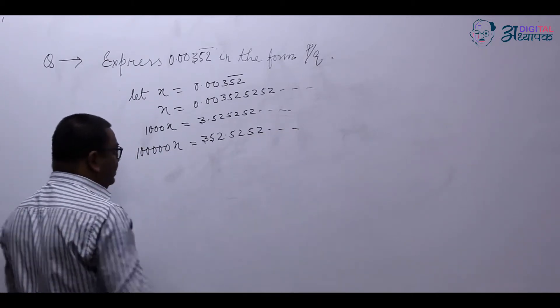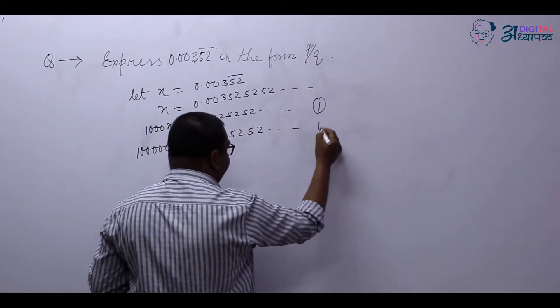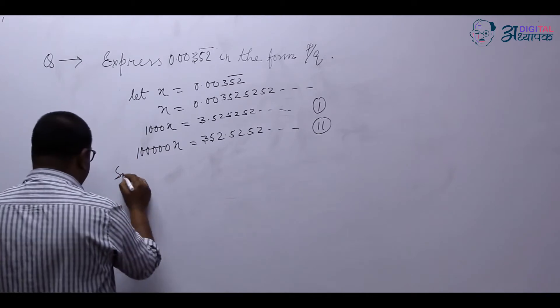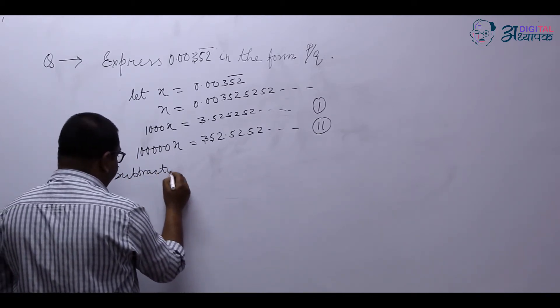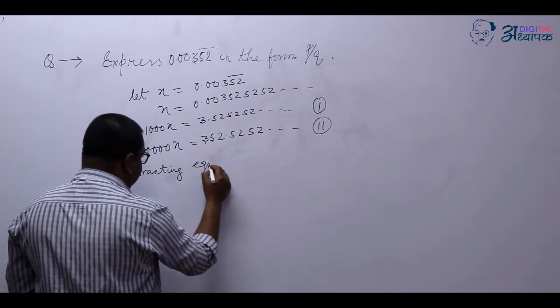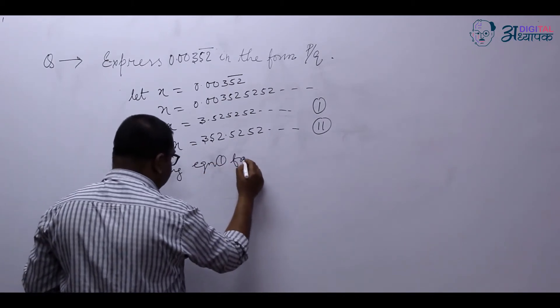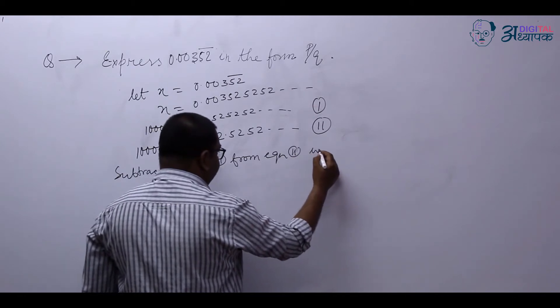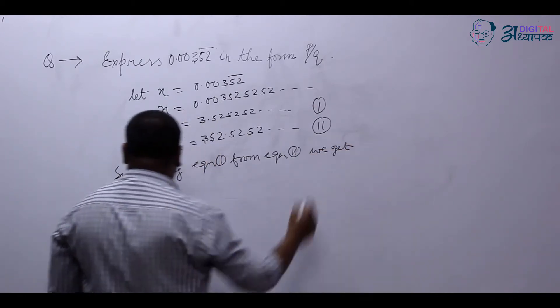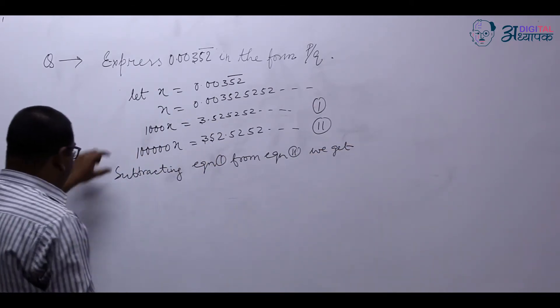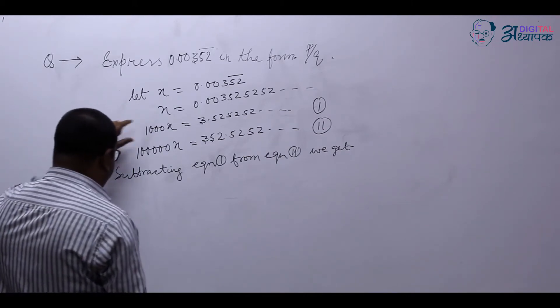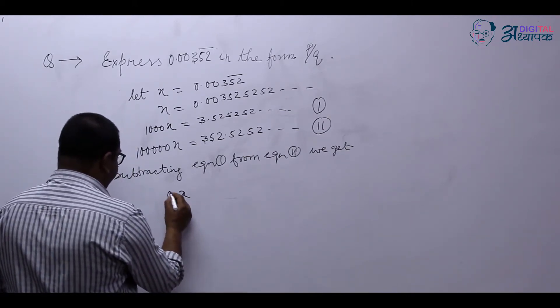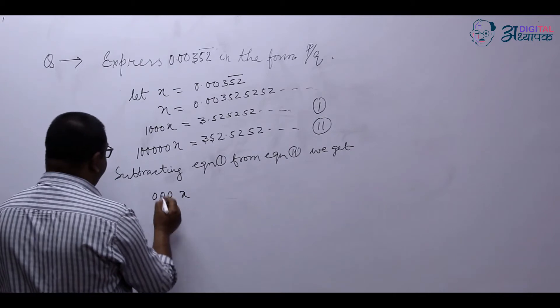Now let it be equation 1, let it be equation 2. We subtract equation 1 from equation 2 and we get 100000x minus 1000x.